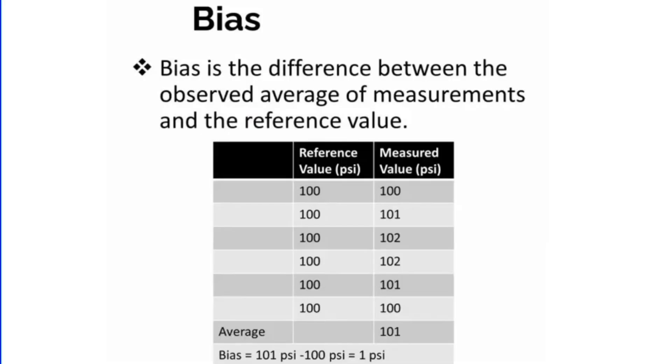Before talking about linearity and stability, it's very important to understand the meaning of another concept, and that is bias. When we talk about bias, it is primarily the difference between the reference value and the actual value. The intent is that we take a value in a standard room under controlled conditions, then go to the actual workplace where maybe the temperature is high, humidity is high, there is a lot of noise, and we check the same parameter there. The difference between those two values is called bias.